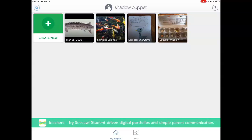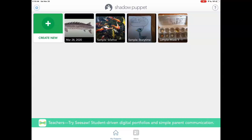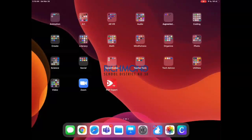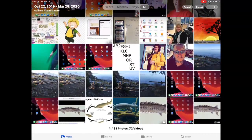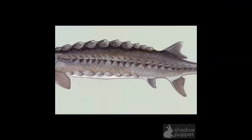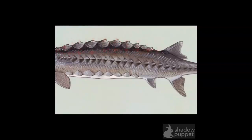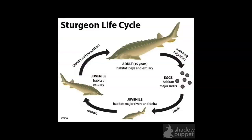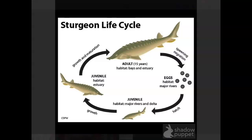Now I'm also going to go into my Photos app, and you can see — there it is — there is my video. If I tap on it: the Sturgeon, and you can see almost like an armored plate, these things called scutes that are on the Sturgeon. Here's the Sturgeon life cycle, and the Sturgeon life cycle is quite long.